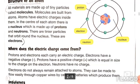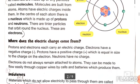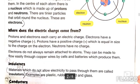Atoms have electric charges inside them. In the center of each atom, there is a nucleus which is made up of protons and neutrons. There are tiny particles that orbit around the nucleus. These are electrons.